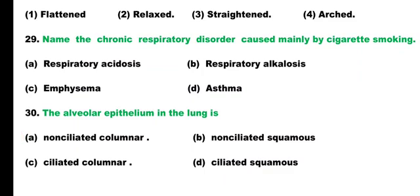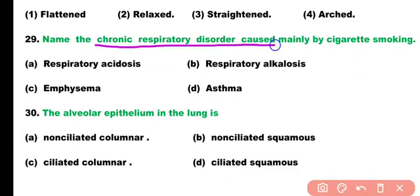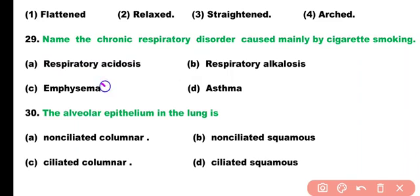Question number 29. Name the chronic respiratory disorder caused mainly by cigarette smoking: respiratory acidosis, respiratory alkalosis, emphysema, or asthma. Correct answer is option 3 (C). The chronic respiratory disorder mainly caused by cigarette smoking is emphysema.